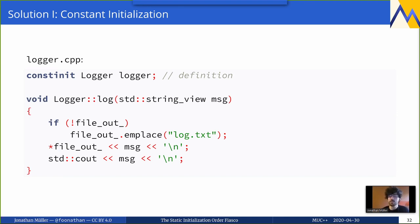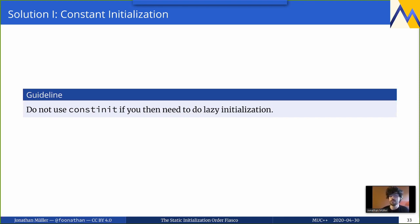One downside of using constinit with our logger is that we now do a form of lazy initialization, and the way we do it here is not thread safe. If you want thread safety, it's really difficult to perform lazy initialization by hand. So do not use constinit if you then need to do lazy initialization by hand — there's a much better solution.